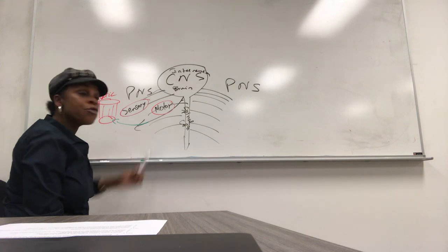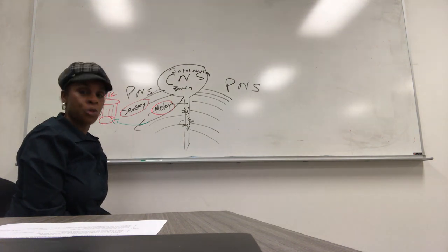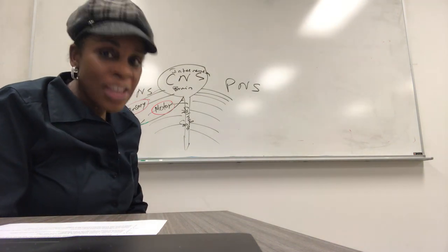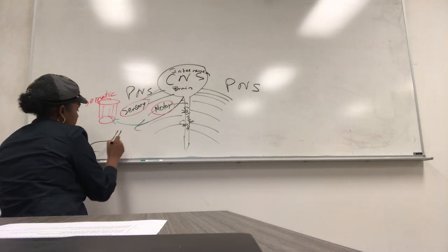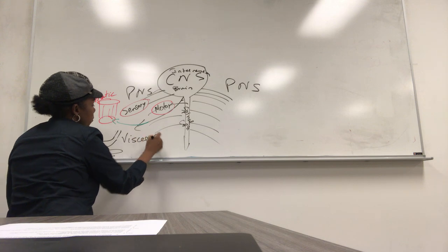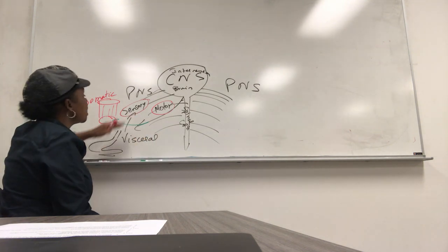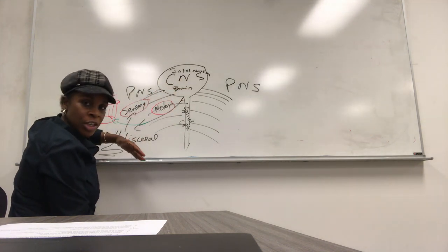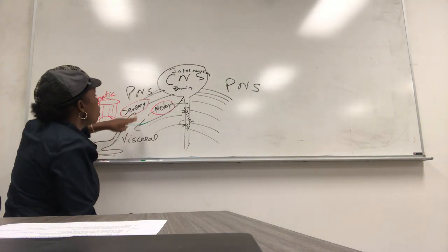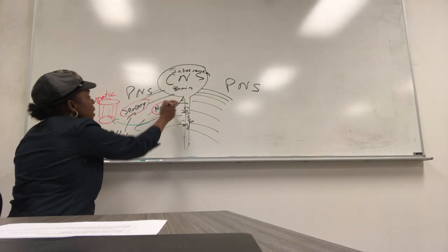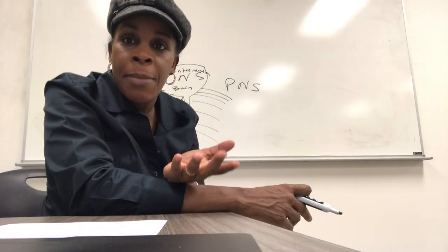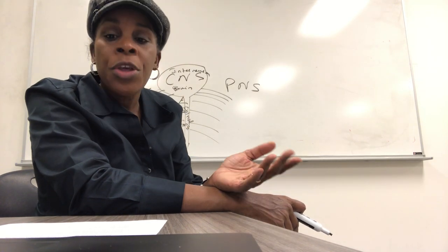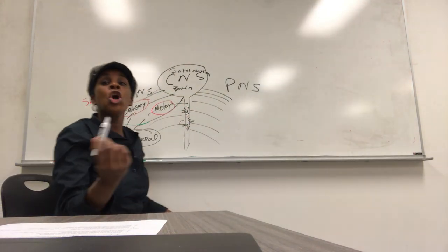If the sensory neuron comes from an internal organ — we call those viscera — then the neuron will be called a visceral sensory neuron. The visceral sensory neuron takes information from the internal organ to the central nervous system. If the command is given back to the same visceral organ, it's called the visceral motor neuron. Because the visceral motor neuron works automatically — you don't make a decision about how your food is digested, or how urine is made — that part of the nervous system is called the autonomic nervous system.